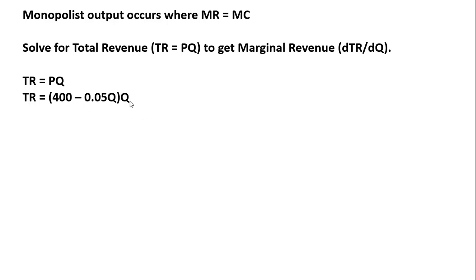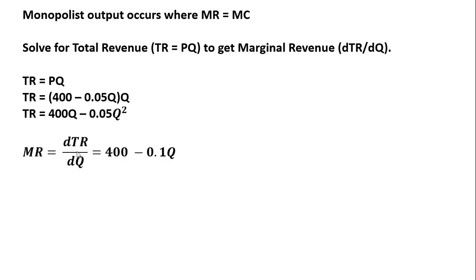That is all multiplied through by Q. Doing that multiplication: Q times 400 gives us 400Q, and then this last term is minus 0.05Q squared. Now let's get marginal revenue by taking the derivative of total revenue with respect to Q. The derivative of 400Q is 400. The derivative of minus 0.05Q squared is minus 0.1Q — we bring down the 2 in front, so 2 times 0.05 gives us 0.1, and then we subtract 1 from the exponent, leaving Q.